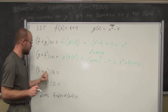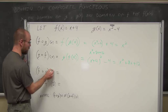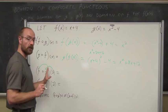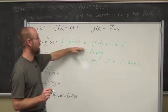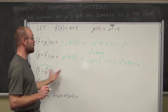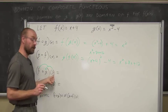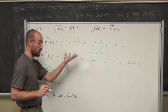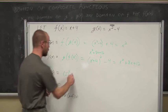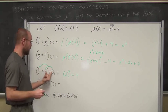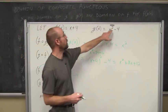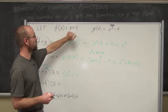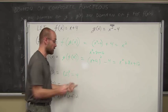Now find F(G(2)). In this notation, we evaluate G at 2 and then evaluate F at that output. But first, let's use the composite function we already found: F(G(X)) = X². Evaluating at X = 2 gives 2² = 4. Now let's verify the long way: put 2 into G: 2² = 4, 4 − 4 = 0. That's the output. Put 0 into F: 0 + 4 = 4. The exact same answer — 4.